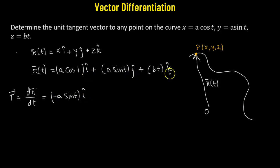The unit vectors i cap, j cap, k cap are constant unit vectors, so we do not take their derivative; they are simply treated as constants. The derivative of a sin(t) will be a cos(t) j cap, plus the derivative of bt will be b k cap.